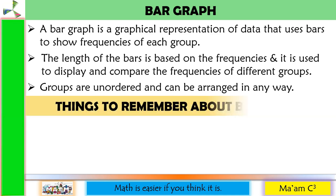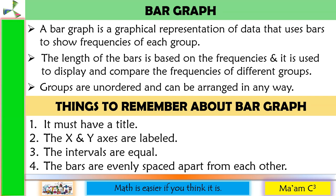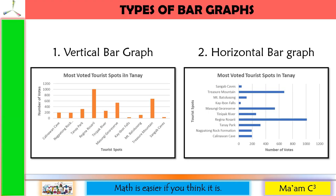Here are some things to remember about bar graphs. Number one, it must have a title. Two, the X and Y axis are labeled. Three, the intervals are equal. And four, the bars are evenly spaced apart from each other. There are two types of bar graphs: vertical and horizontal. The vertical graph displays better than the horizontal graph. The horizontal bar graph is useful when names are too long to fit at the foot of the column, just like this one.